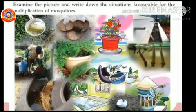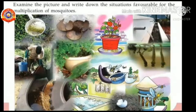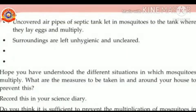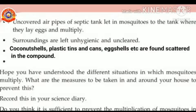Examine the picture and write down the situations favorable for the multiplication of mosquitoes. First, uncovered air pipes of septic tanks let mosquitoes into the tank where they lay eggs and multiply. Second, surroundings are left unhygienic and uncleared. Third, coconut shells, plastic tins and cans, and eggshells are found scattered in the compound. Fourth, stagnant water.